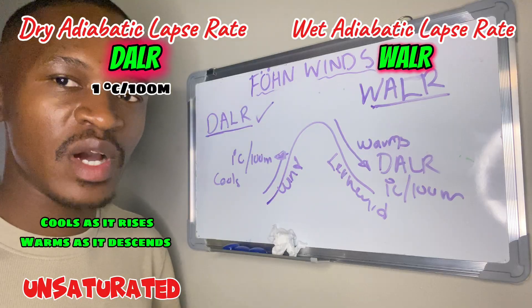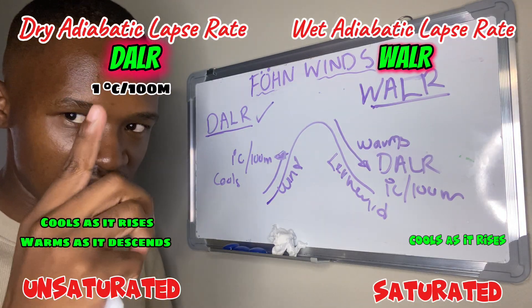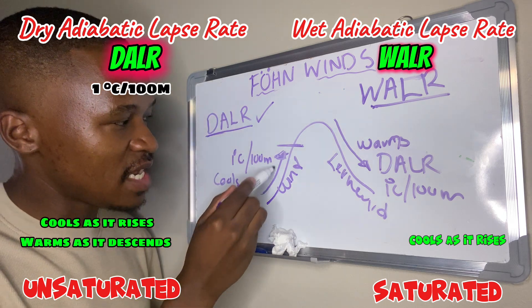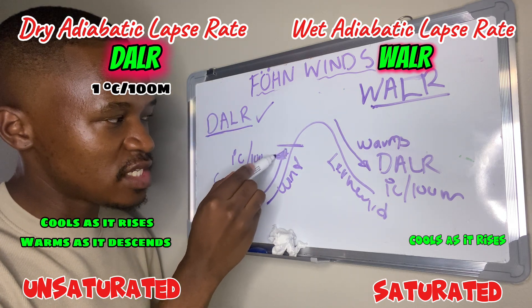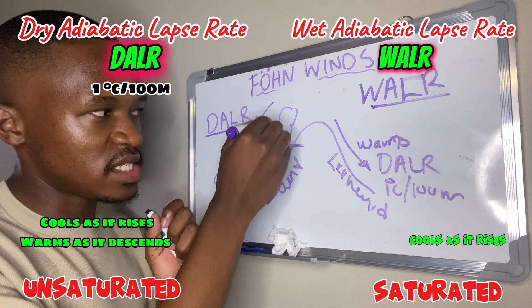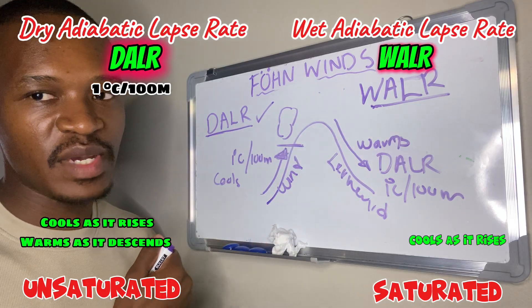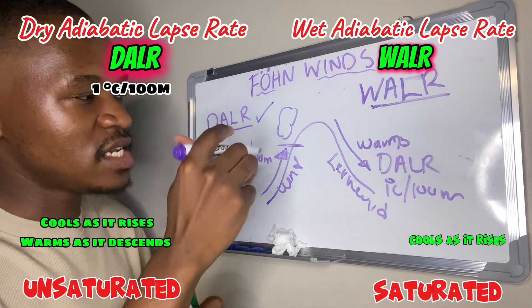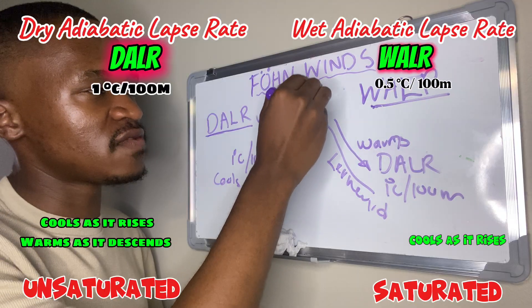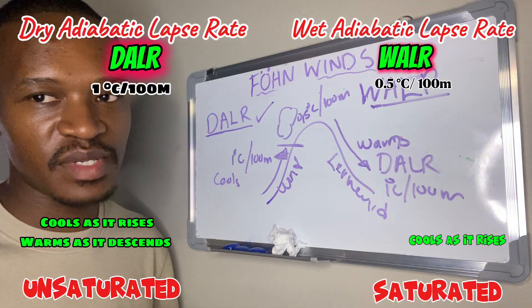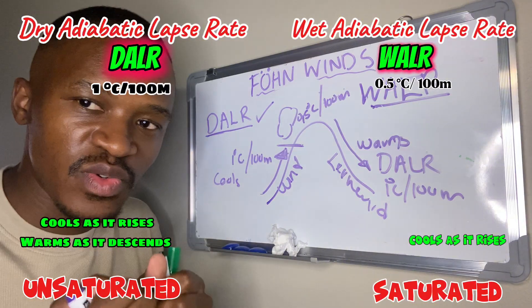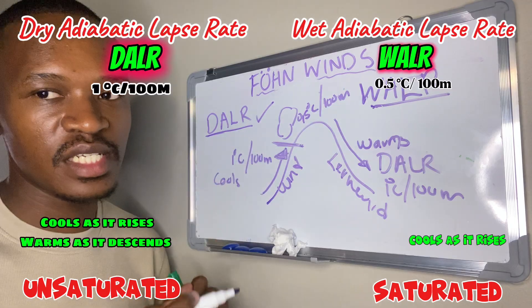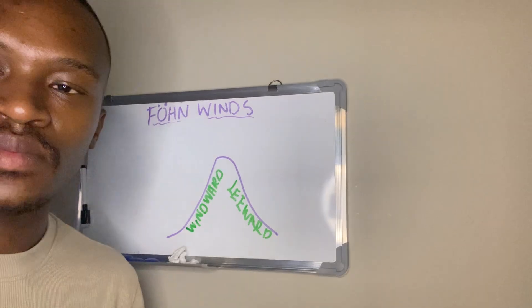The wet adiabatic lapse rate refers to how saturated air cools as it rises. This happens towards the top, at the peak of the mountain. Initially the air was cooling at the dry adiabatic lapse rate. Once the air reaches its dew-point temperature and condensation starts, that's when we get our wet adiabatic lapse rate — when the air is now saturated and holds a lot of moisture. This happens at 0.5 degrees Celsius for every 100 meters, and occurs towards the top of the mountain when condensation starts.